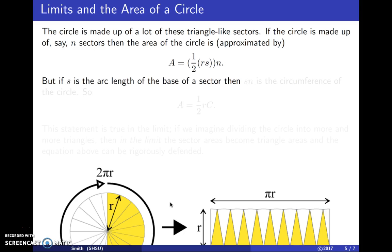But if s is the arc length of the base of a sector, and if we have n of these sectors, then sn is the circumference of the circle. So, we can replace sn in our equation by C, the circumference. So, the area of a circle is ½r times C.